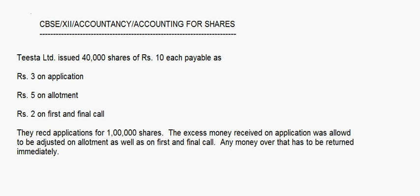The allotment table shows four categories. Category A applied for 10,000 shares, shares allotted nil. Category B applied for 20,000 shares, shares allotted 15,000. Category C applied for 30,000 shares, allotted 15,000. And Category D applied for 40,000 shares, allotted 10,000.